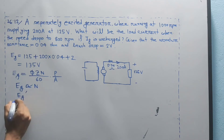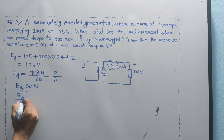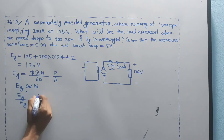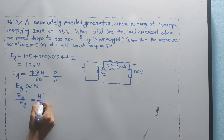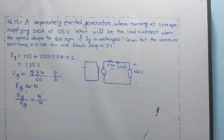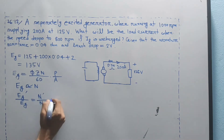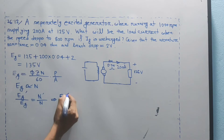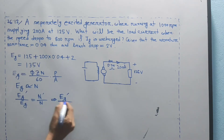So Eg is proportional to N. Since the field current is unchanged and flux is constant, Eg1 is equal to 125 plus 200 times 0.04 plus 2, which gives Eg1 equal to 135V.